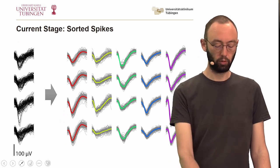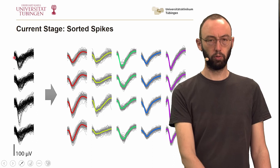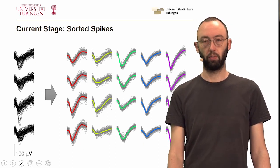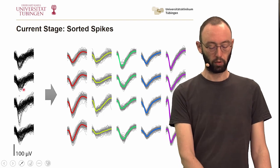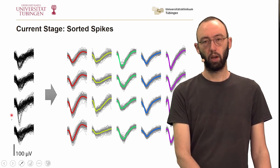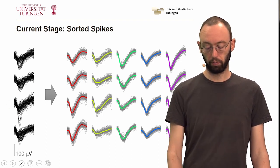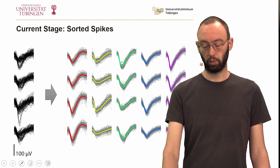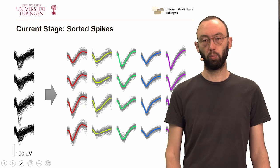Currently, we went from extracted waveforms, extracted spikes, to nicely sorted clusters. You can clearly see that, for example, here on channel three, the data is much more homogenous after being sorted into the different clusters. All the big spikes, for example, went into this purple cluster.